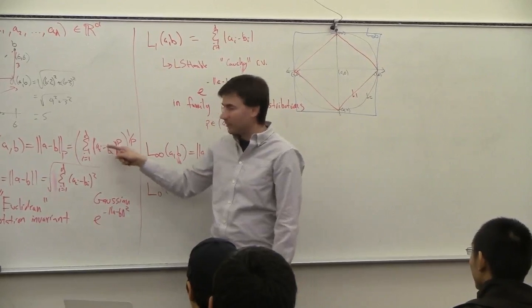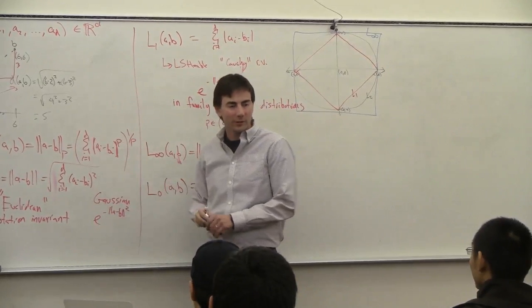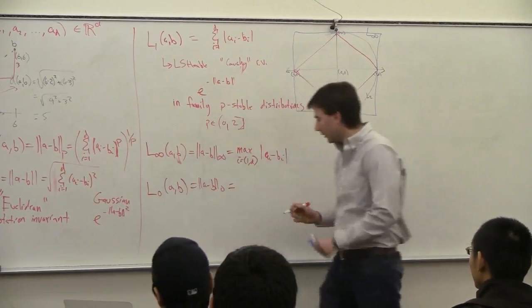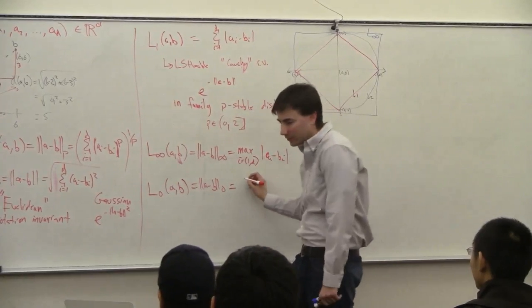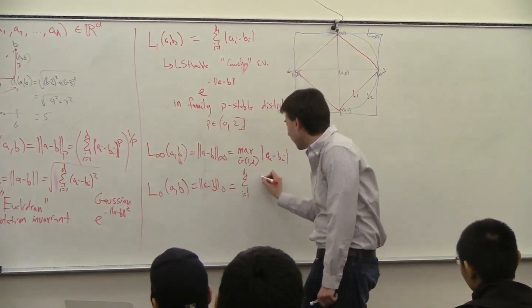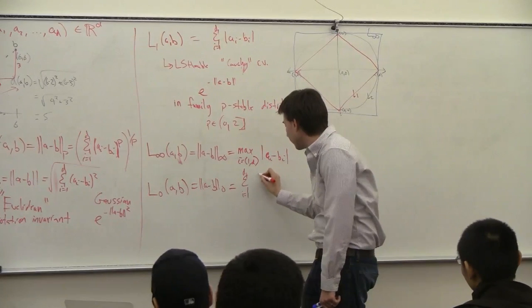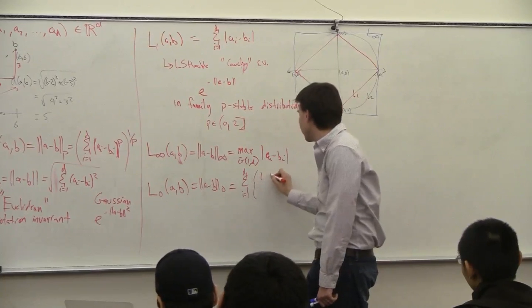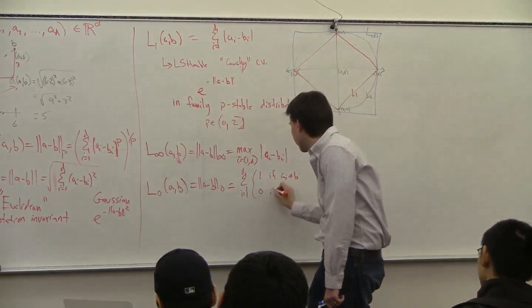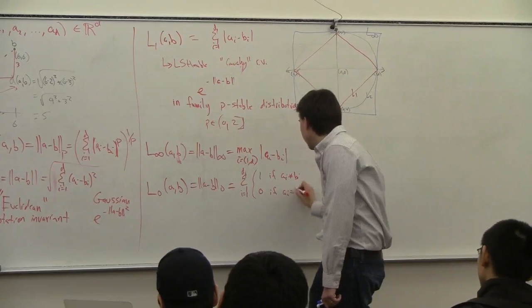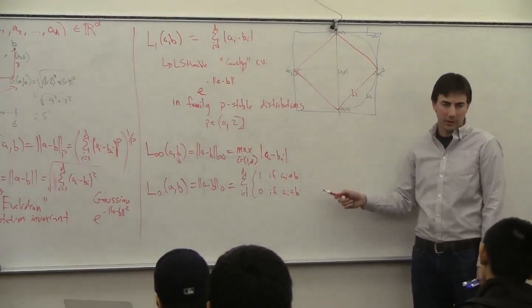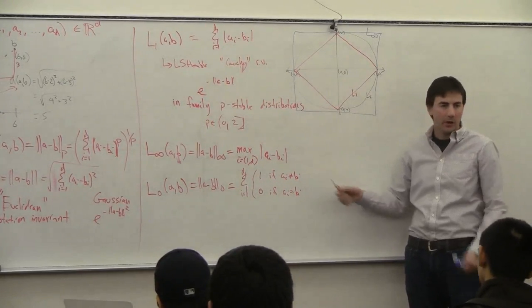If it's zero, you say the distance is still zero; if you take it to the power zero, it's one. So what this is, is a sum over i equals one to d of one if a_i is not equal to b_i, and zero if a_i equals b_i. So it's just counting — it's counting the number of elements which are different.